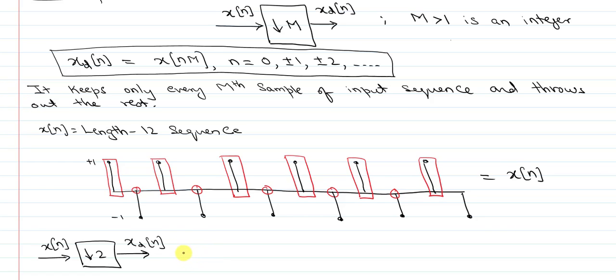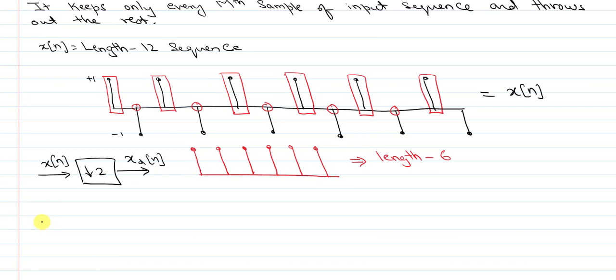So if you were to see then what XTN will look like will be a length 6 sequence. It will have length 6 because you threw out every other sample because you had decimation by a factor of 2.